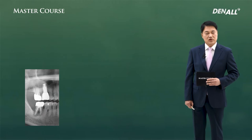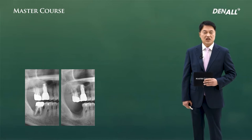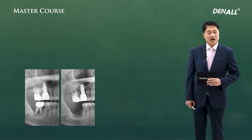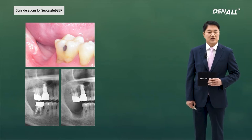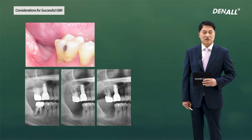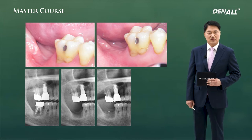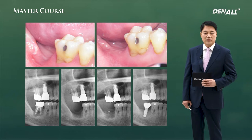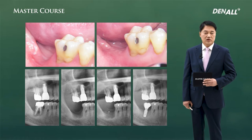In number 47, due to advanced periodontitis, the patient came in for implant. There was a lot of bone resorption, so implant placement seemed difficult. For a staged approach, GBR was planned. This is after GBR — you can see that the resorbed situation has been improved so that we can place an implant. Through appropriate GBR in areas where implant seems difficult, you can make it a much easier situation.